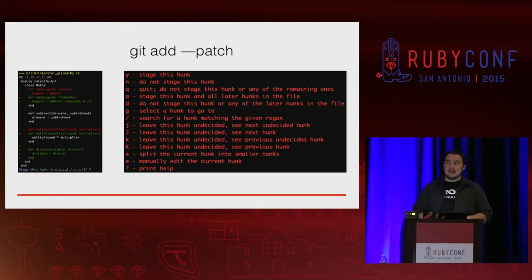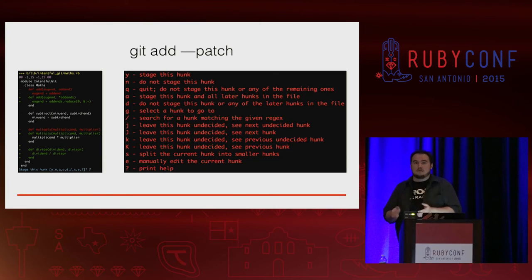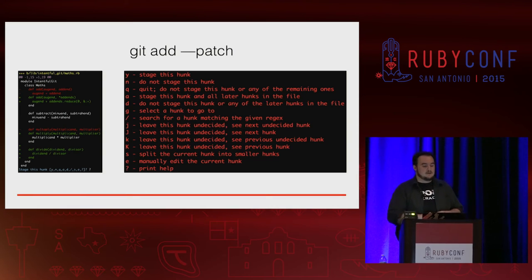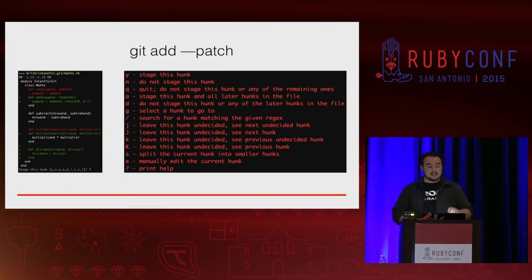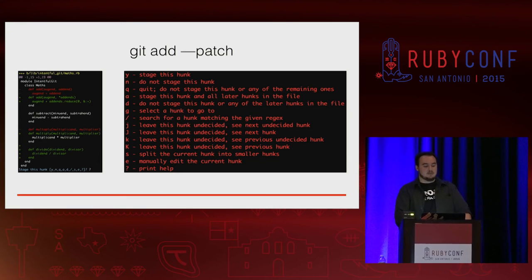I've run git add patch and it pulls up a chunk of text asking if you want to add all of this. Well, that's more information than I want to add. When it says at the bottom 'stage this hunk,' I put in a question mark that provides a menu showing all available options. What we want to do is split that current hunk into a smaller hunk. So I run split.